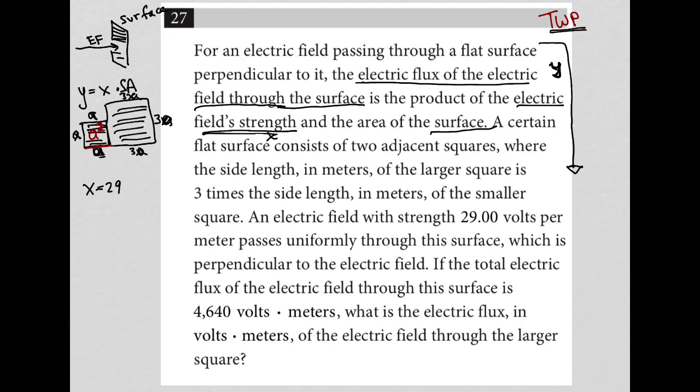right? Side times side. And the area of the large square will be 9A squared. Again, side times side. So the total surface area for those two squares side by side would be 10A squared. Okay, so 29 volts per meter passes uniformly through this surface, which is perpendicular to the electric field.